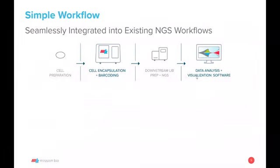For those not familiar with the Tapestry platform, it's very simple. We take single cells, put them on our microfluidic device on the Tapestry platform, which encapsulates the single cells and barcodes them. We then make an NGS library and put that on an Illumina sequencer, and then we visualize the results of the SNVs and CNVs using our software and data analysis package.